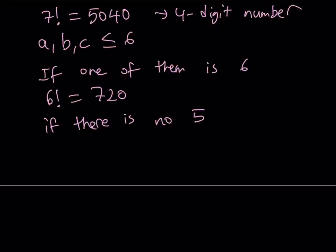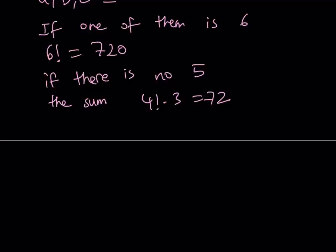Well, if we don't have any 5s in this equation, none of the digits is a 5, then the sum will be at most 4 factorial times 3, which is 72. That's not a good thing because that's a two-digit number. So that means we have to have a 5, at least one 5.